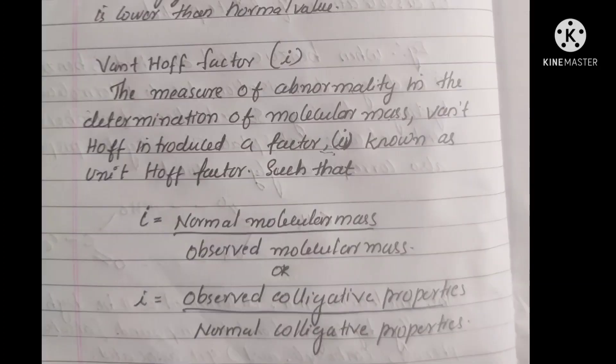The Van't Hoff factor. The experimental values of colligative properties and molar masses of certain solutes differ considerably from the normal expected values. This is caused by change in molecular state, such as association or dissociation undergone by solute in solution. The Van't Hoff factor is suggested by Van't Hoff, and it is a value that expresses the extent of deviation of the experimental values from the normal expected value.